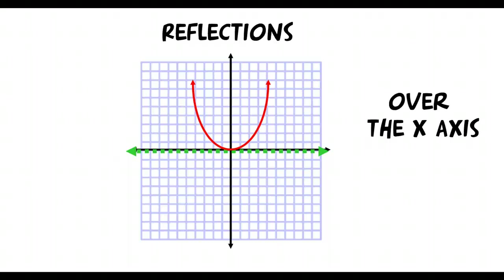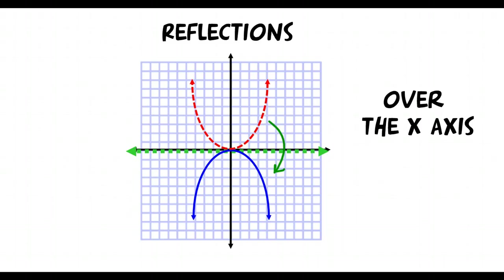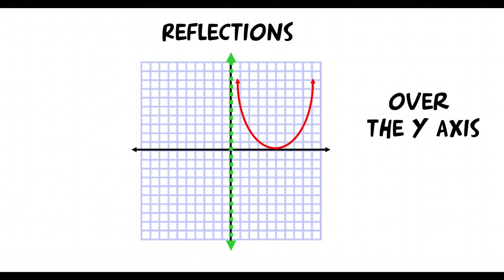The first type of transformation you're going to see is called a reflection. In this particular case, we're going to see a reflection over the x-axis. The x-axis acts kind of like a mirror, so your reflection is just going to flip down in this case. We can also see reflections over the y-axis as well. Here we have a parabola reflected over the y-axis, and there in blue is your resulting image.